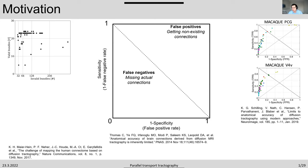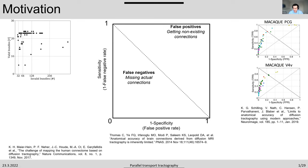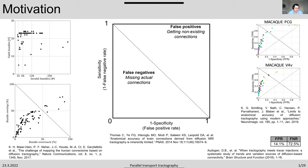In the 2018 tractography challenge, there was a tracer injection comparison against tractography results. In the macaque brain, contestants mostly accumulated in the corner with largely false negatives, which were also observed in our previous year validation study. Going back to the ISMRM 2015 challenge, if you look at bundle overlap and overreach, we also see lots of false negatives.